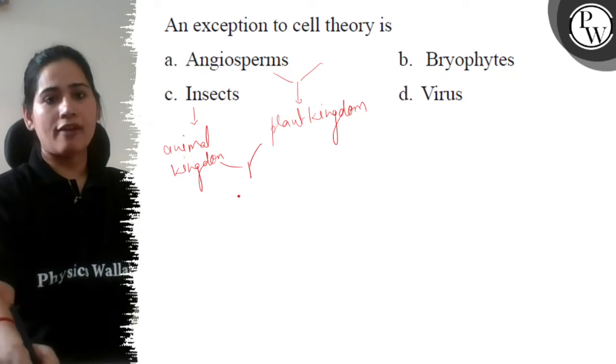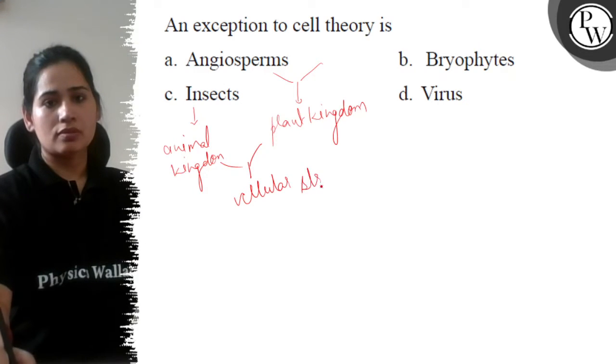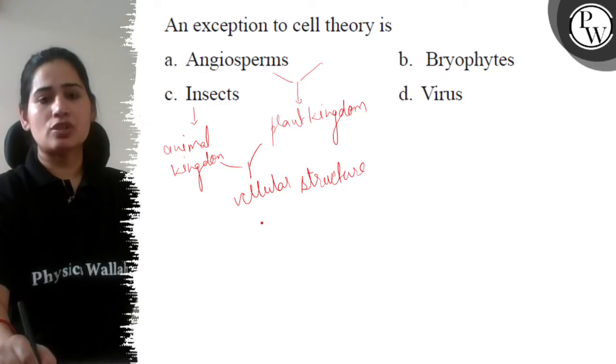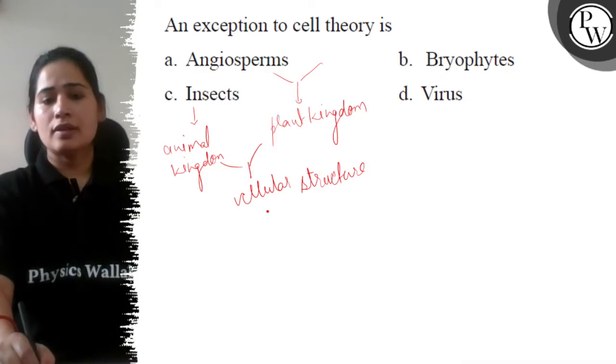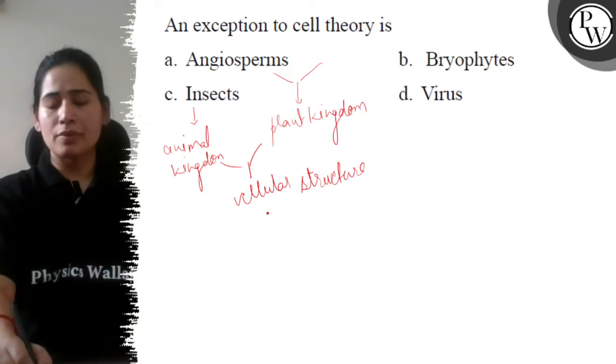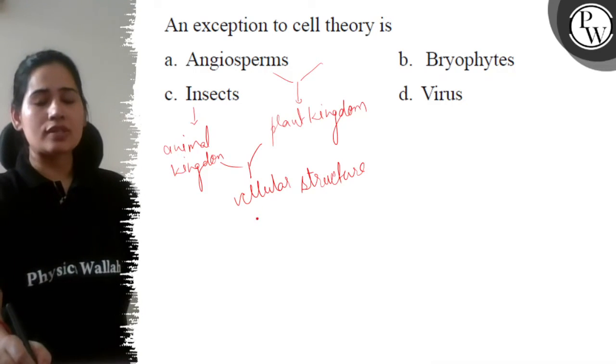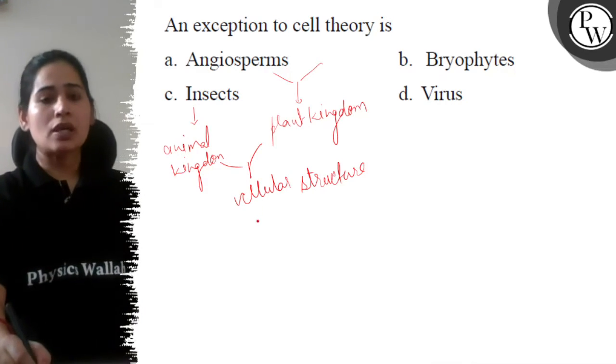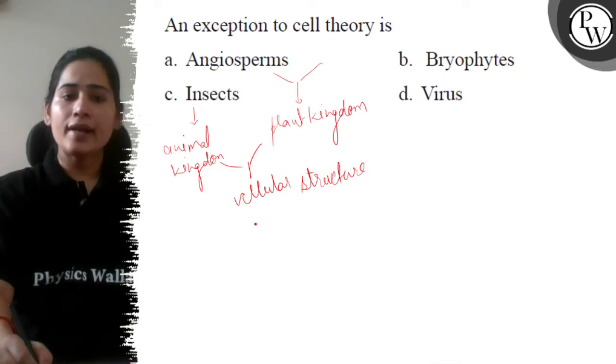They all have proper cellular structure. Proper cellular structure means cell consists of cell wall, cell membrane, nucleus, protoplasm, cell organelle and nucleic acid.